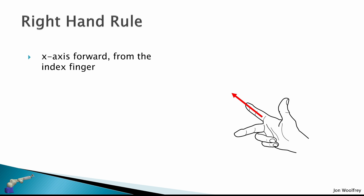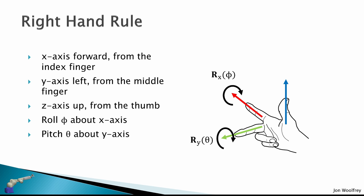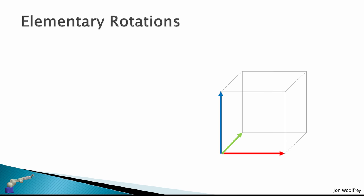To discuss orientation in three dimensions we need to consider the right-hand rule. Taking our right hand and making the gesture shown in the diagram, we have the X axis forward from the index finger, Y axis left from the middle finger, and the Z axis up from the thumb. We can then define a roll angle phi about the X axis, a pitch angle theta about the Y axis, and a yaw angle psi about the Z axis.